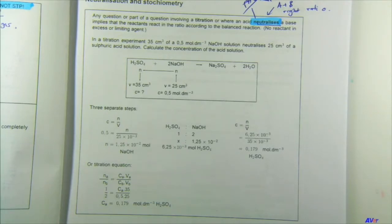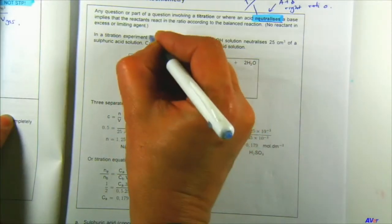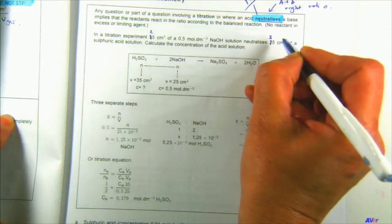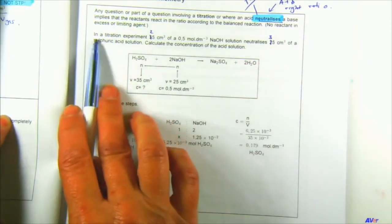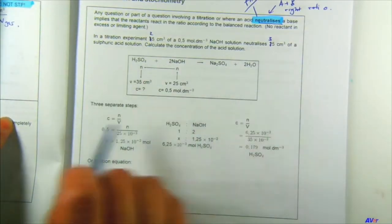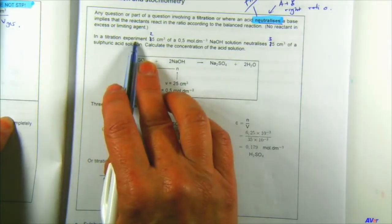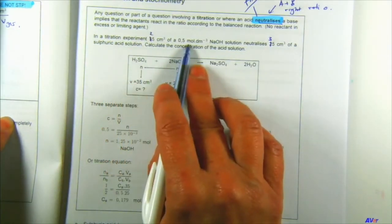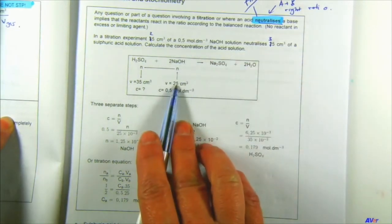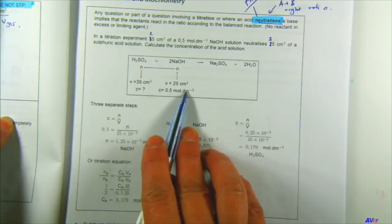When they say 'neutralize,' focus your mind: neutralize does not mean 7 — a neutral solution is pH 7, but neutralization just means reacting in the right ratio. Now re-read the question: in a titration experiment, 25 cm³ of 0.5 mol/dm³ NaOH — they give you the volume and concentration of NaOH.